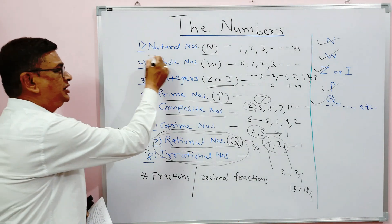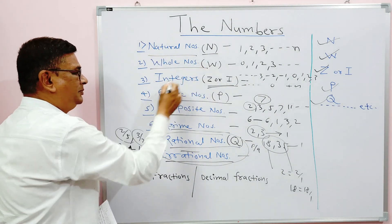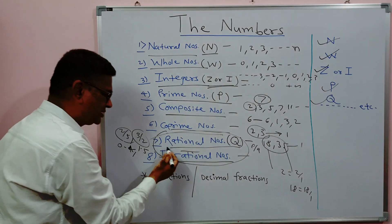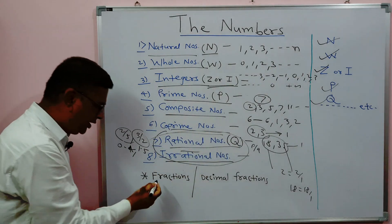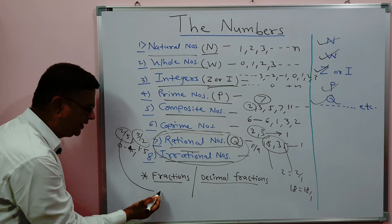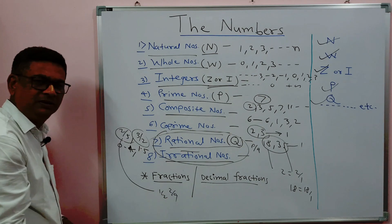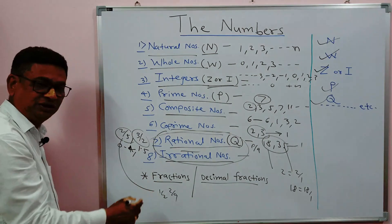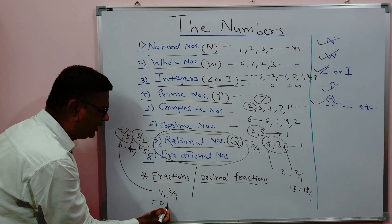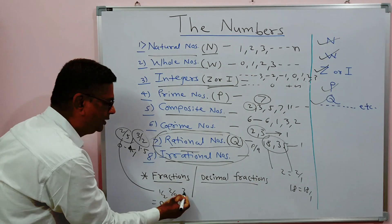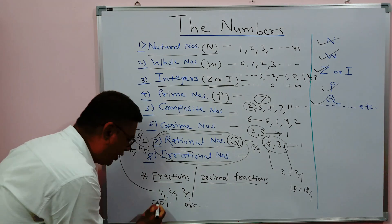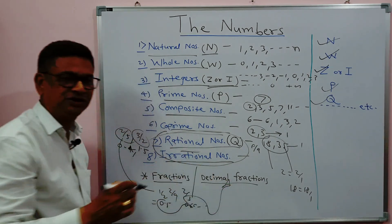We also have fractions and decimal fractions. Fractions are like 1 by 2, 2 by 9, and so on. Their decimal values — for example, 1 upon 2 equals 0.5, and 2 upon 3 equals 0.666... — written in decimal point format are called decimal fractions.